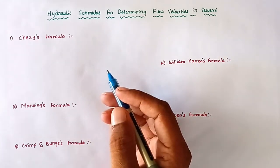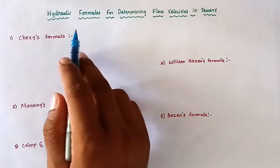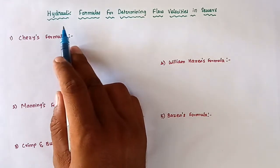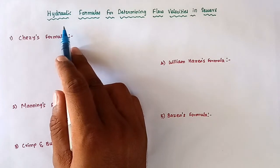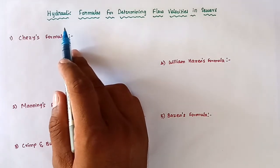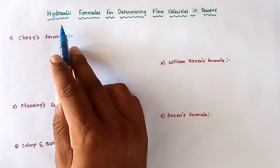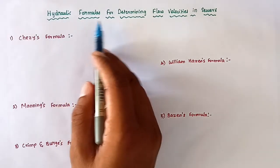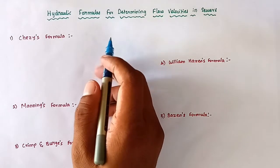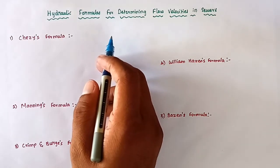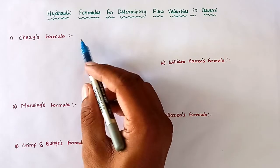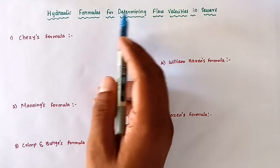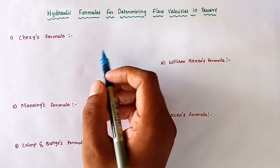Hello friends, welcome to civil engineering exam. Today we are going to see the formulas related with wastewater engineering in the topic of sewer design. So the hydraulic formulas for determining the flow velocities in sewer or drains — we are using five formulas for determining the flow velocities.